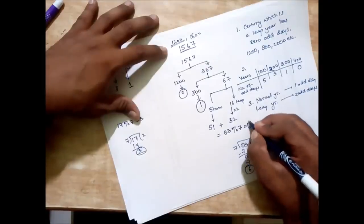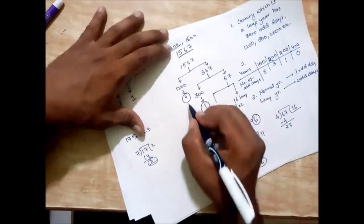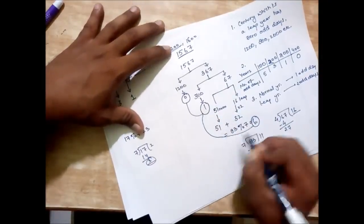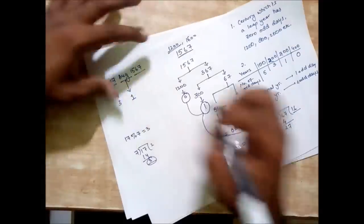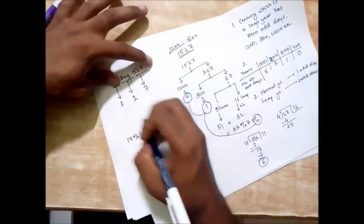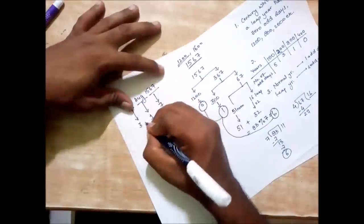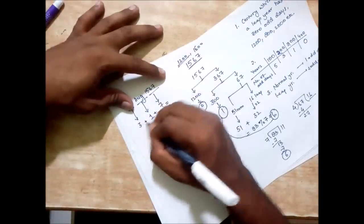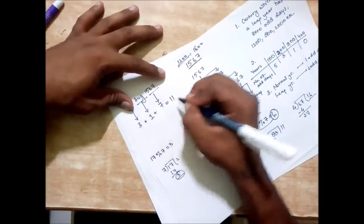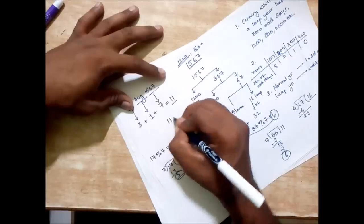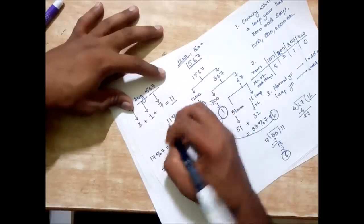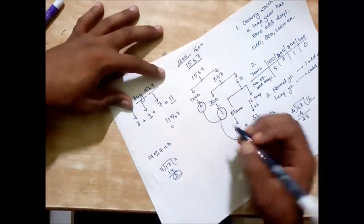So if we look here, this is the number of odd days from 300 and this is the odd days from 67. We add them: 0 plus 1 plus 6 is 7. Now we come here, we add them also: 3 plus 1 is 4, 4 plus 7 is 11.